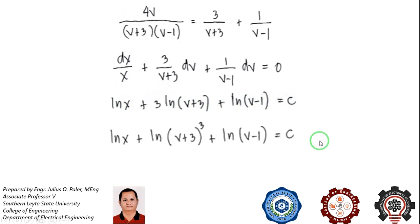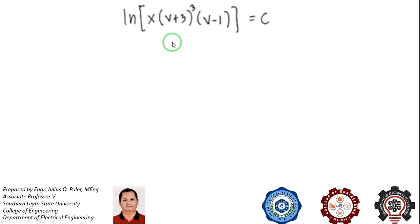Properties of logarithm: we make 3 the exponent of (v + 3). Then properties of logarithm, since all positive, becomes the product of the three terms. If we eliminate ln and get the anti-log, ln is removed and we have e^c on the right side. But since e^c is still equal to c, we can simplify our equation.